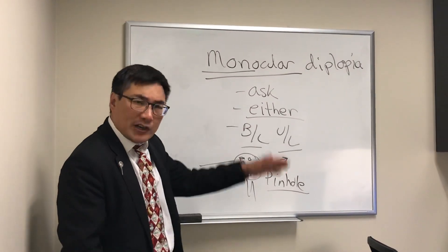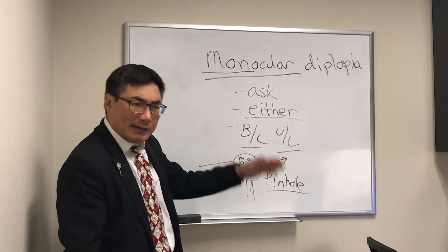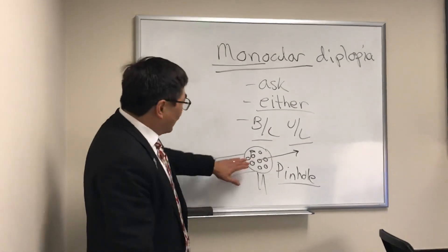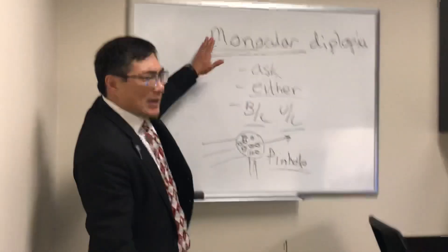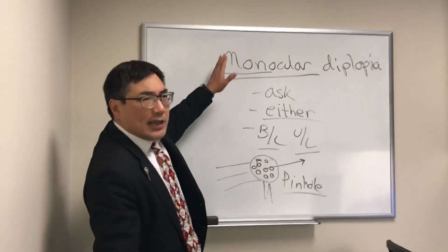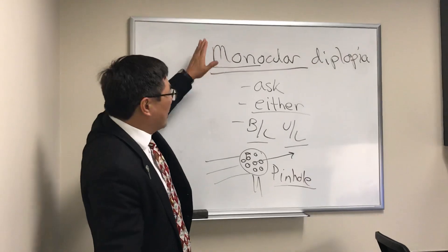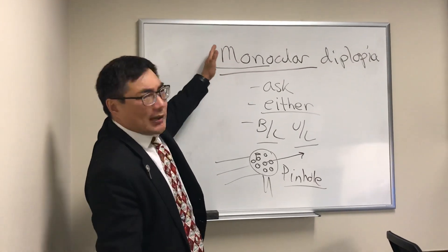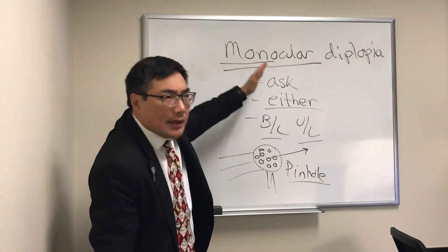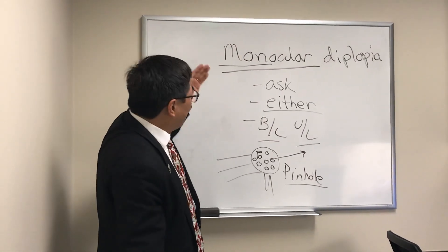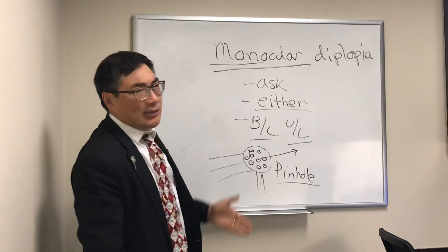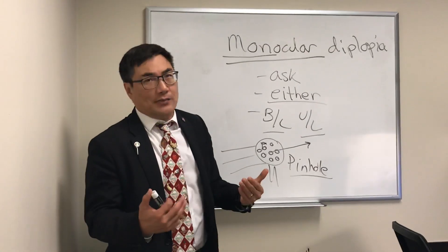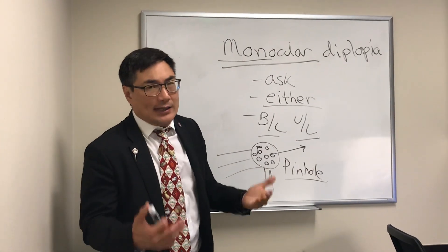In most cases, monocular diplopia is not neuro-ophthalmic and requires a slit lamp evaluation of the front of the eye, a cataract evaluation, and refraction. We don't typically image or perform neuro workup for monocular diplopia. If it's binocular diplopia, that is neurophthalmology and requires workup for the usual suspects — nerve, muscle, neuromuscular junction.